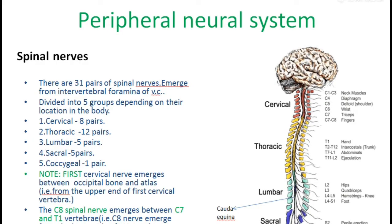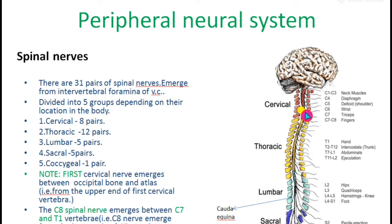Welcome to one more class on the neural system. The peripheral neural system consists of cranial nerves and spinal nerves. In the last video we learned about cranial nerves; now we study about spinal nerves. The spinal nerves arise from the spinal cord, which is protected in the vertebral column.